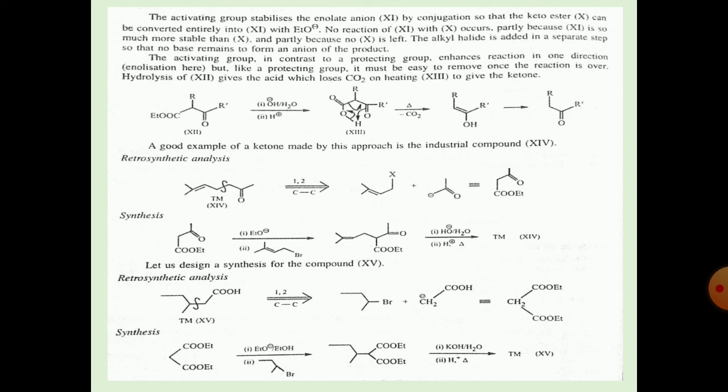A good example is a ketone made by this approach for an industrial compound. The retrosynthetic analysis shows the target molecule broken down by 1,2 carbon-carbon disconnection to give the alkyl halide. In the synthesis, the ketone and ester groups react with OEt, attacking the ketone group to form the enolate, which then attacks the alkyl halide to give an adduct; H+/H2O gives the target molecule. A further example uses malonate ester (COEt/COEt) with OEt and alkyl halide, and KOH/H2O with heating gives the target molecule.